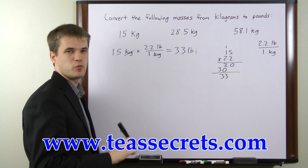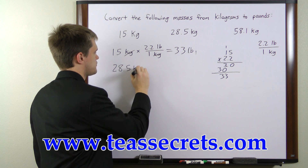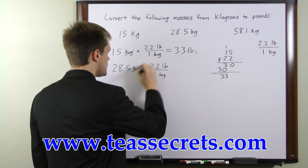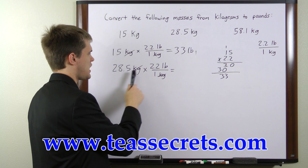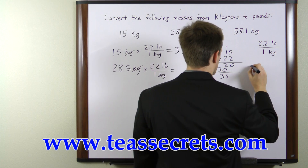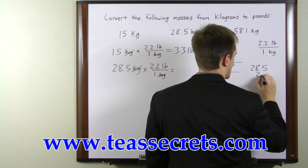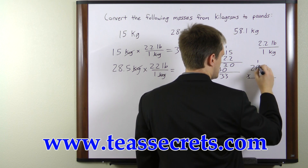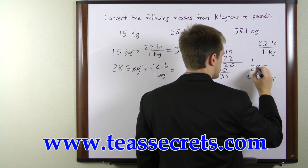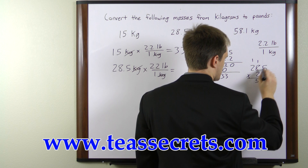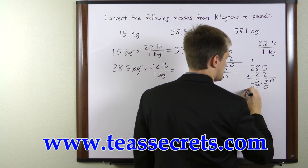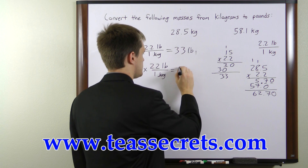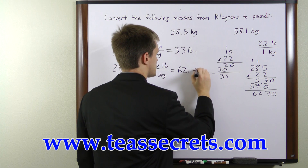Our second number is 28.5 kilograms. We'll multiply it once again by our conversion factor of 2.2 pounds per one kilogram. Kilograms cancel once again, and we have 28.5 times 2.2 pounds. 2 times 5 is 10; 2 times 8 is 16 plus 1 is 17; 2 times 2 is 4 plus 1 is 5. We're going to have the same numbers repeated one decimal place over to the left. We add these up and get 62.7, so this is equivalent to 62.7 pounds.